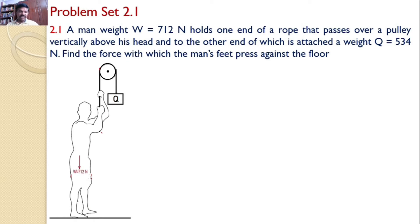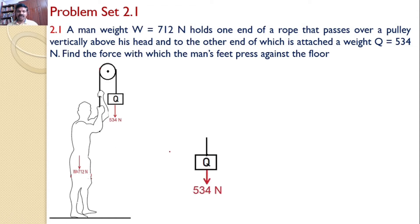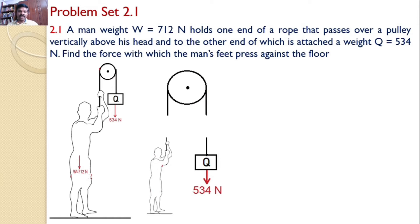Given that the weight of the man is 712 Newtons and the weight of Q is 534 Newtons. To analyze this system, let us draw the free body diagram of all three parts: weight Q, the rope that passes over the pulley, and the man who is holding the rope.